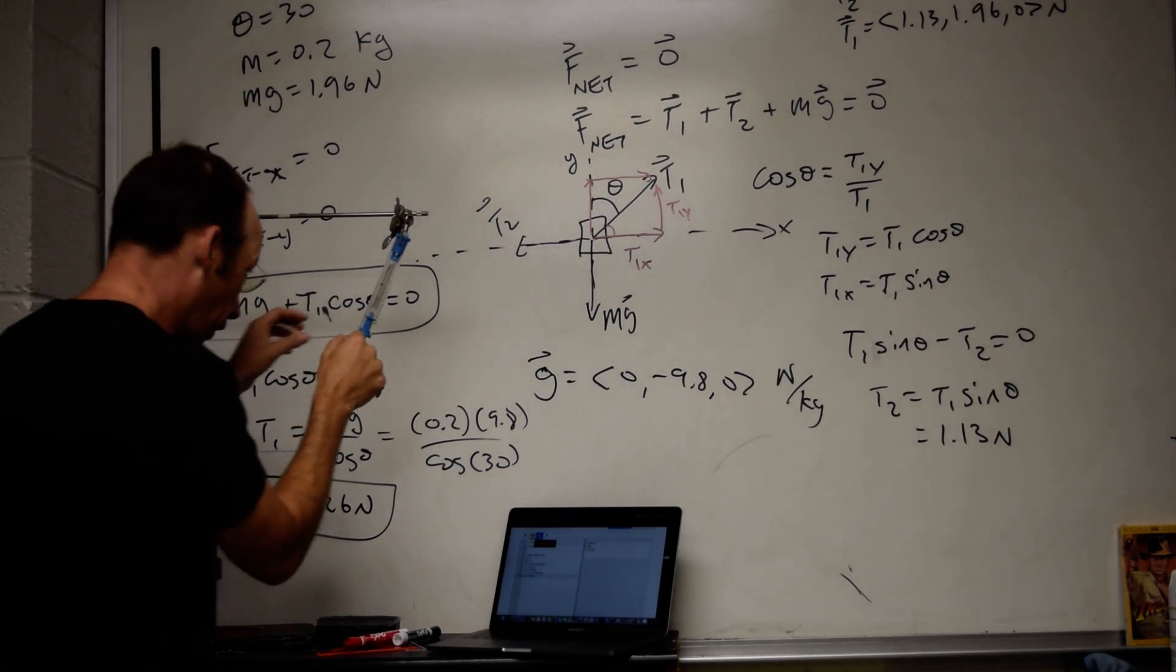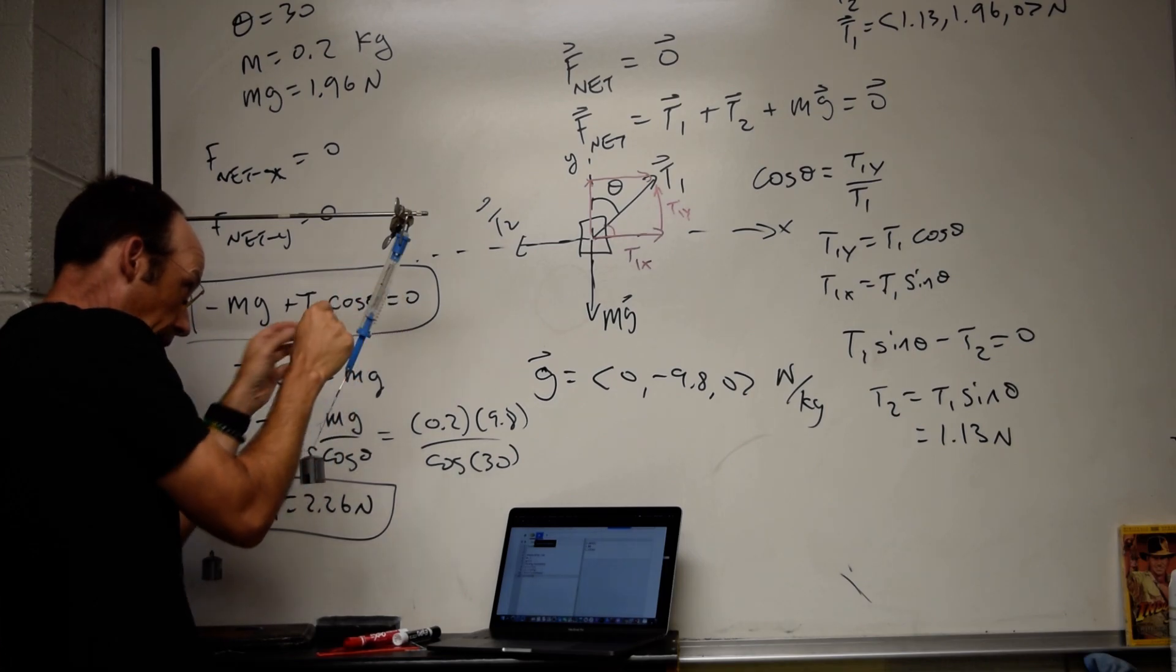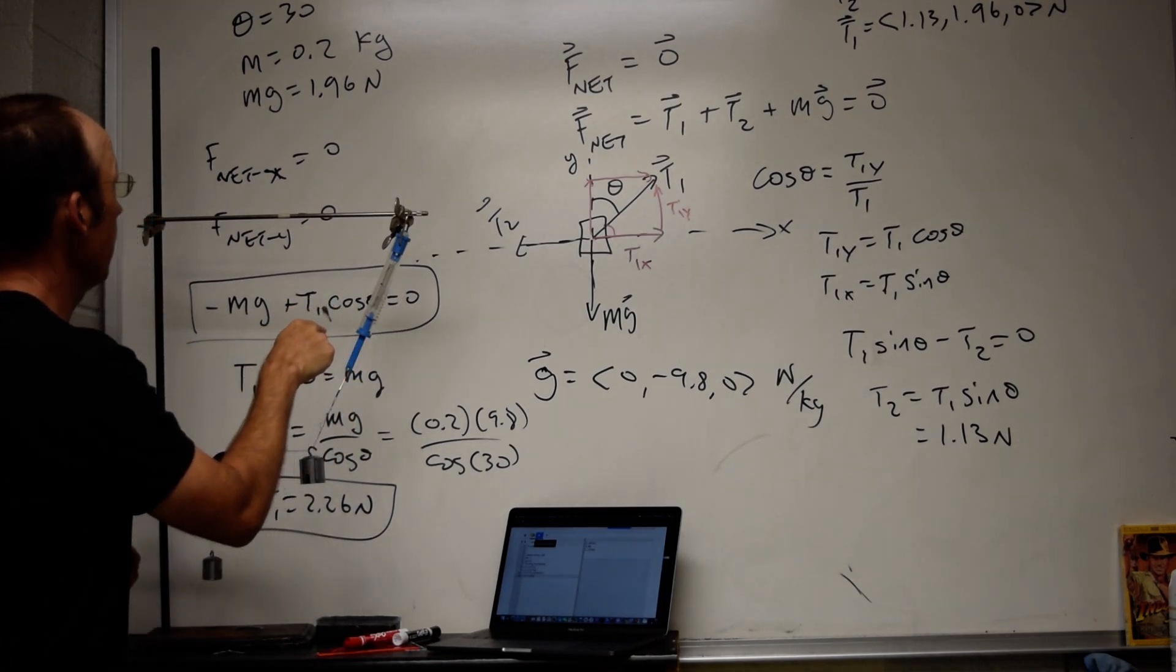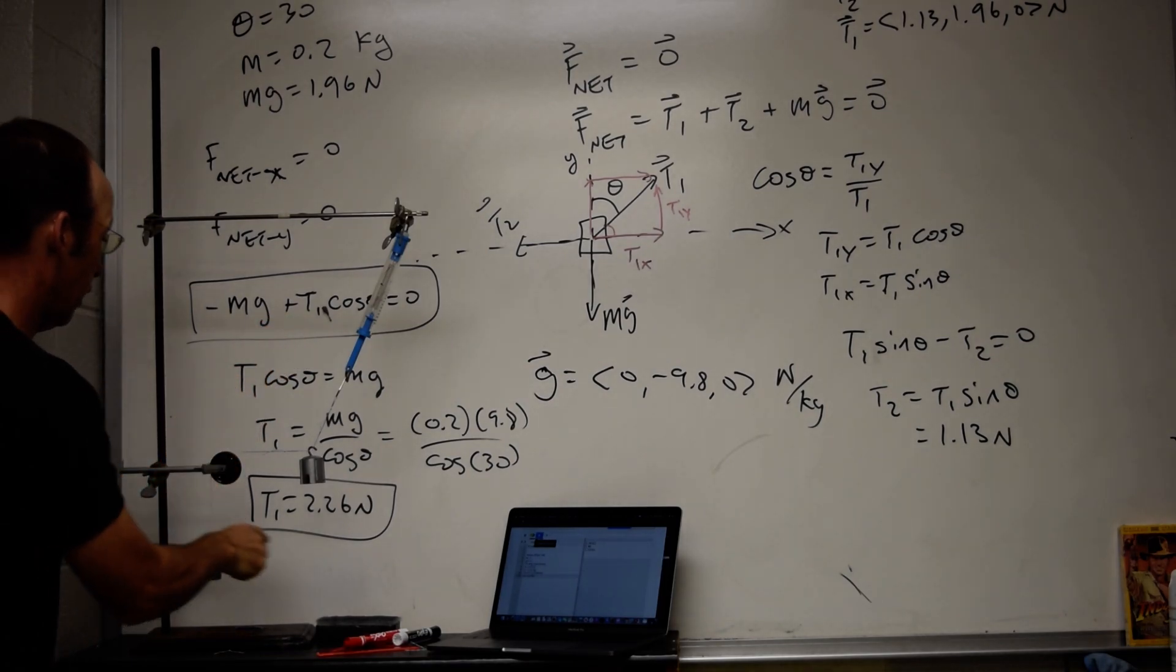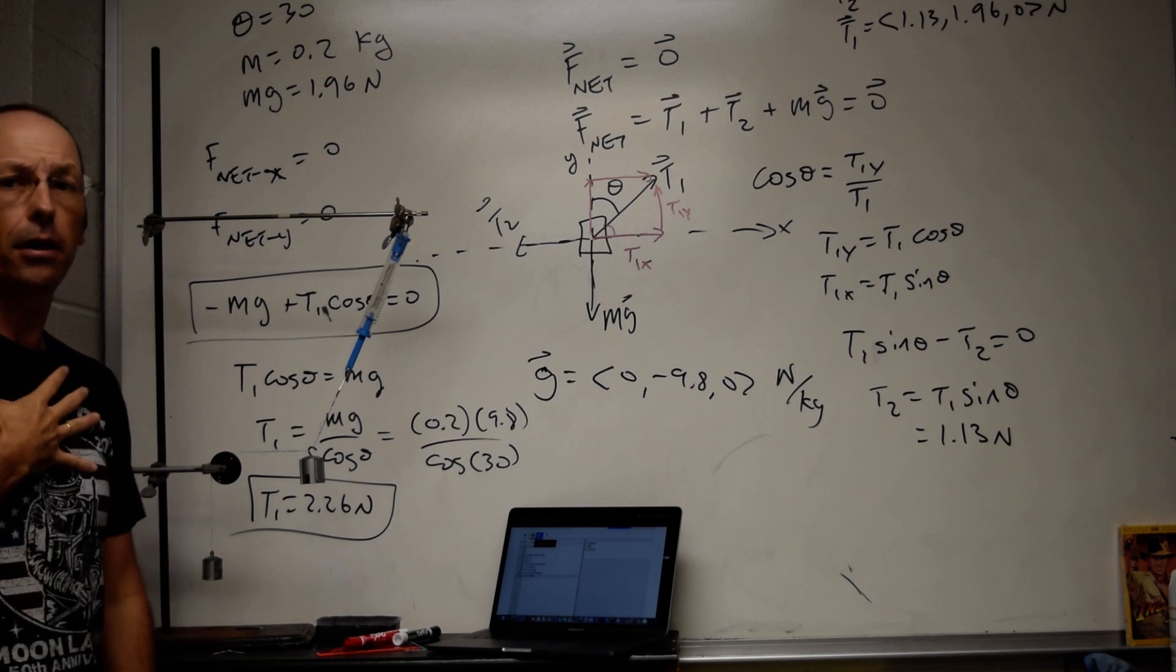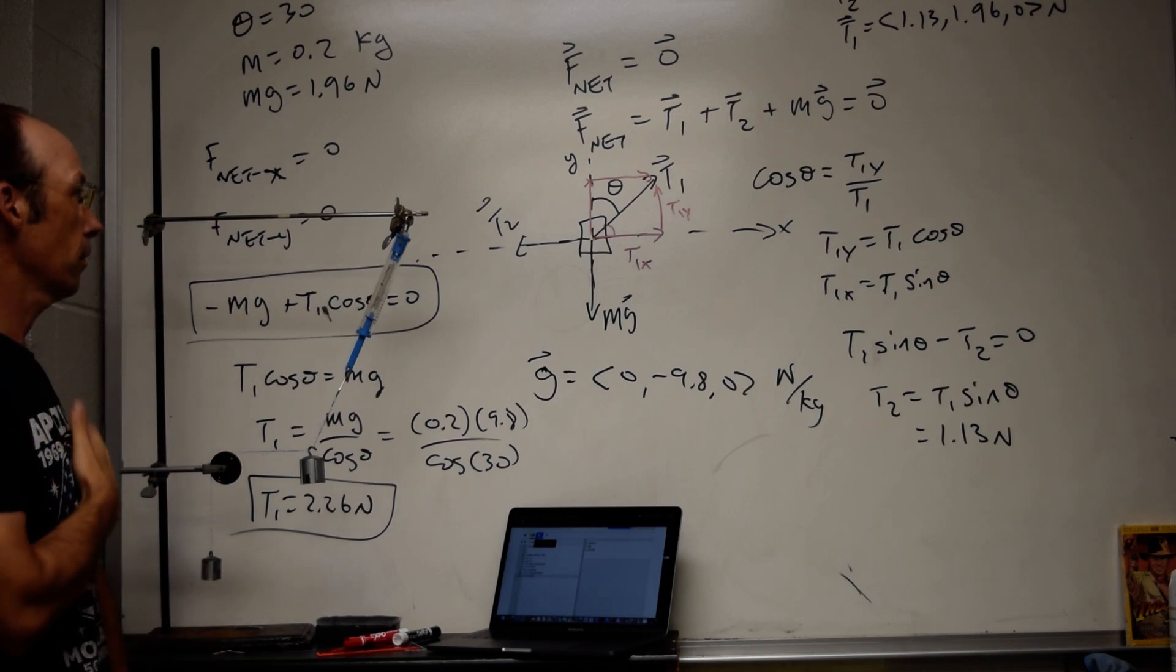If I look over here at this scale, I get 2.7 for the tension in here. Whereas I calculated 2.26. So again, it's not exactly correct, but it's pretty good. I'm pretty happy.